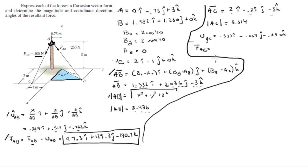And you're going to get that the force of AC is 221.4i minus 27.9j minus 332k.